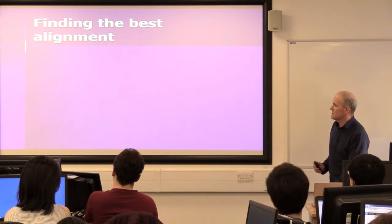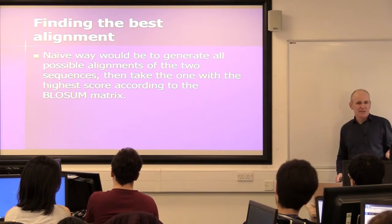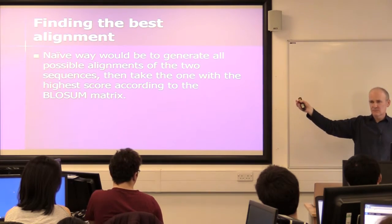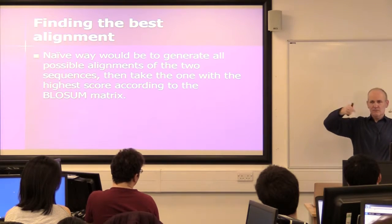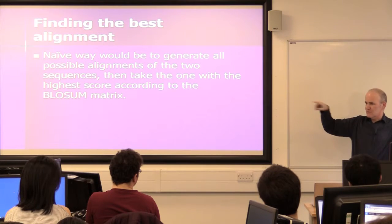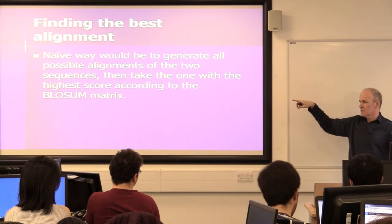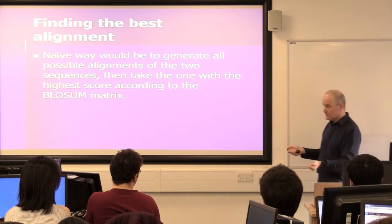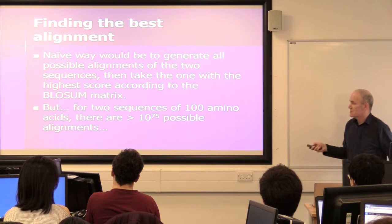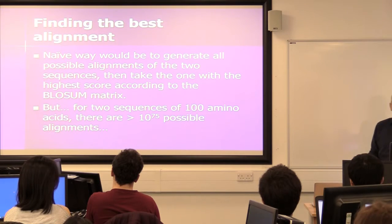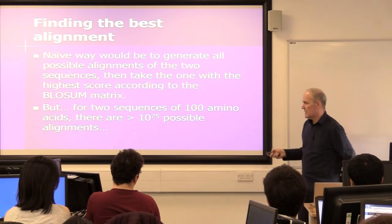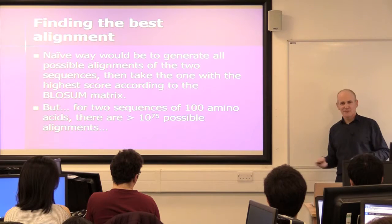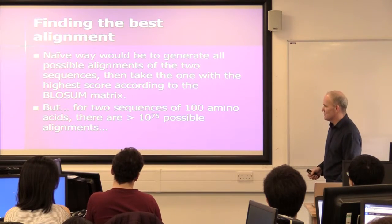So how do you find the best alignment? The naive way is: you generate all possible ways of aligning two sequences, add up every column for each alignment taking away gap penalties, get a number for each, and take the best one. However, for two sequences of just 100 amino acids there are 10 to the power of 75 possible different alignments. If you go to 1000 amino acids, this number becomes more than the number of atoms in the universe. It's not practical.